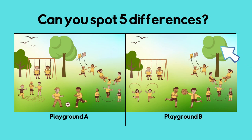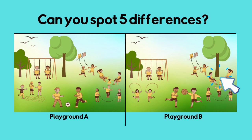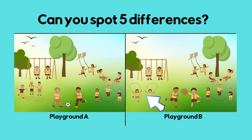The tree is in a different place. In Playground A, they are playing soccer or football. In Playground B, they are playing basketball. The teeter-totter is backwards. In Playground A, they are playing hopscotch. In Playground B, they are skipping. There are only two birds in Playground B.